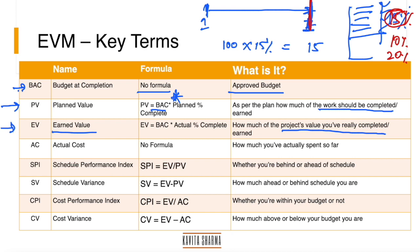EV = BAC × actual percentage complete. For example, if we completed 15%, then EV = $15. While doing this work, the team would be spending money — paying contractors or team members at a per-dollar or per-hour rate.